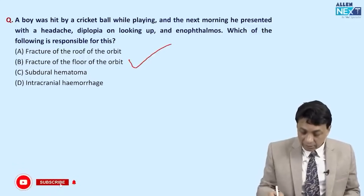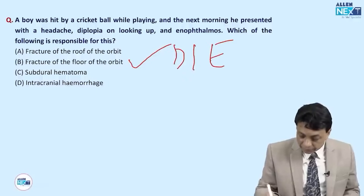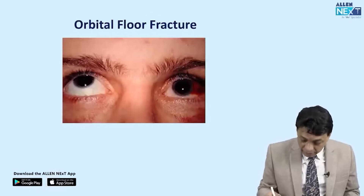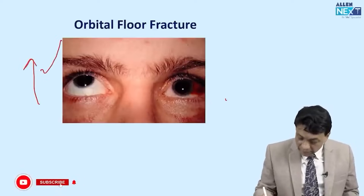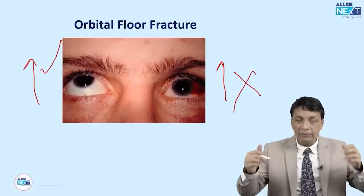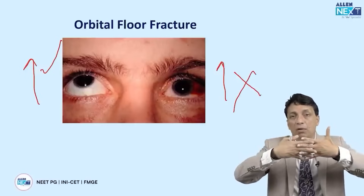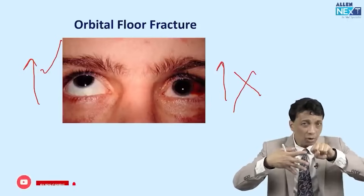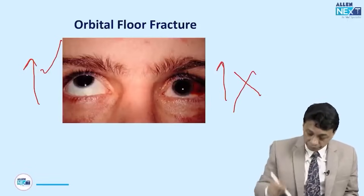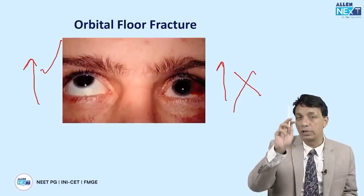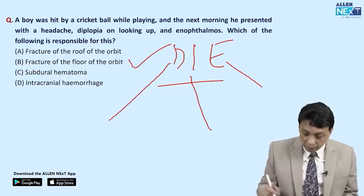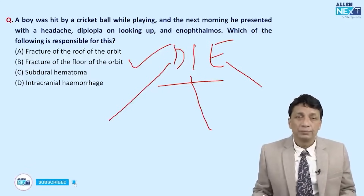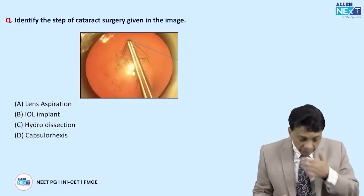In a blowout fracture, the inferior rectus gets trapped in the fractured floor and cannot allow the eyeball to move upward. Enophthalmos is a classic sign. The classic triad: diplopia on upward gaze, infraorbital anesthesia, and enophthalmos. You can see the affected eye is unable to look up while the other eye does so normally, because the inferior rectus is entrapped in the orbital floor fracture. The floor is the most commonly fractured wall of the orbit.